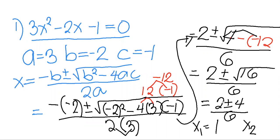For x₂: 2 minus 4 is negative 2, divided by 6, which gives negative 2 over 6, or negative one-third. So our two roots are 1 and negative one-third.